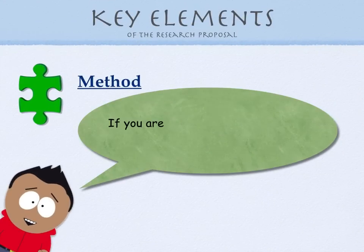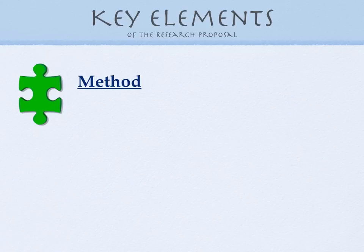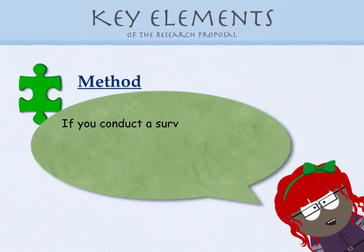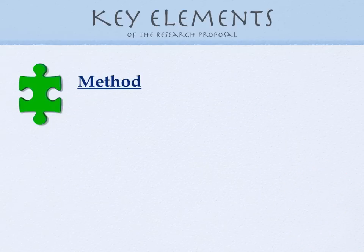Now if you are working with human beings in any way, you must notify IRB — the Institutional Review Board. This is very important. If you're conducting a survey, an interview, a focus group, or some kind of experiment, you are technically interacting with human subjects, so you need to notify the IRB. You might want to give that a little time because sometimes that can take a while.